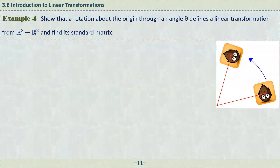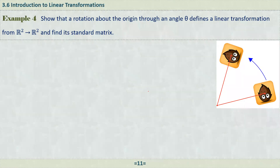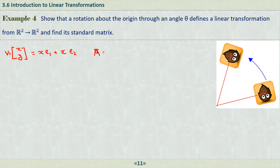Now let's look at an example: Show that a rotation about the origin through an angle theta defines a linear transformation from R2 to R2, and find its standard matrix. Since any vector v = (x, y) can be written as x·e1 + y·e2, if we know the effect of the transformation on e1 and e2, we can write the standard matrix A as [T(e1) | T(e2)].